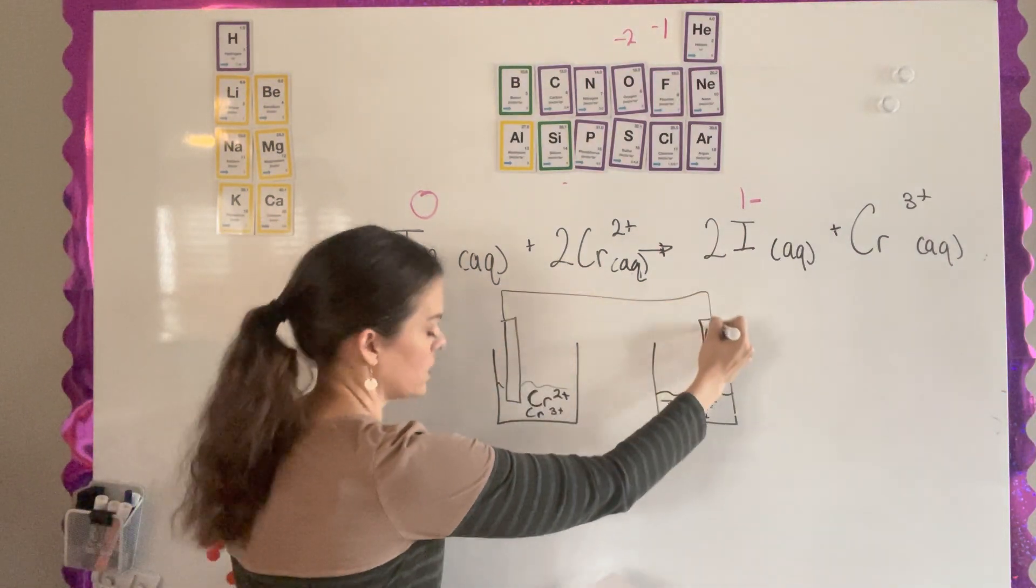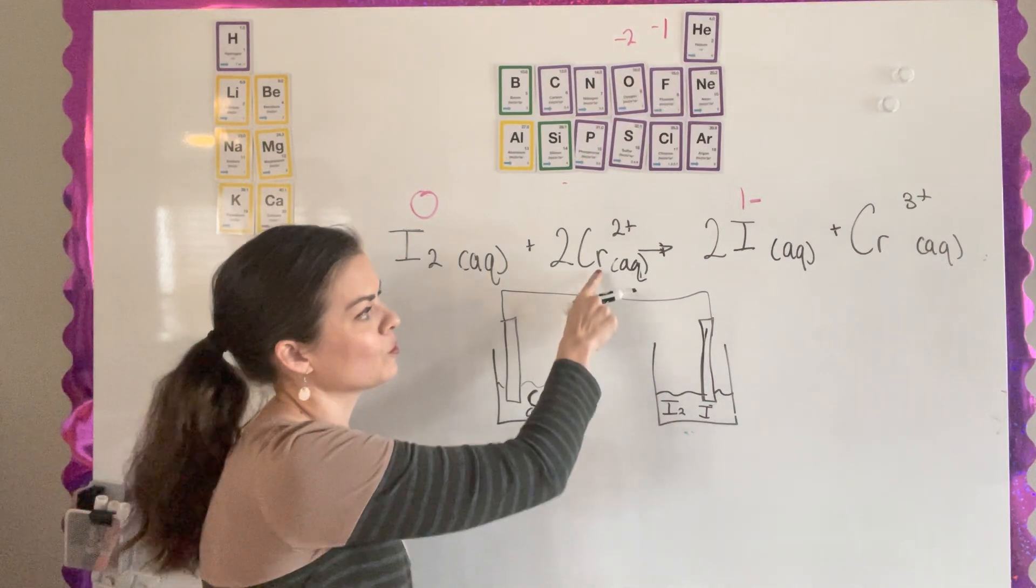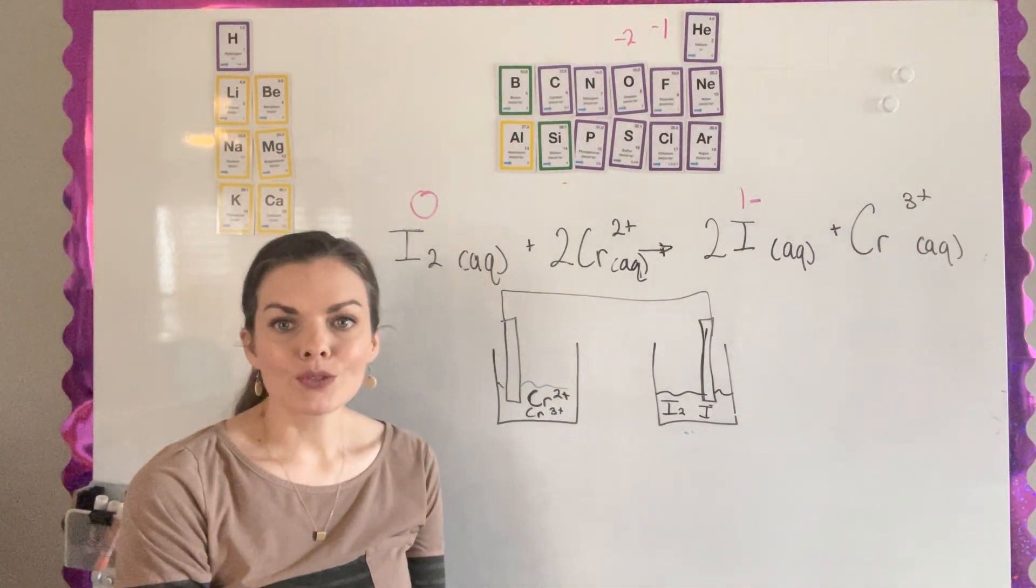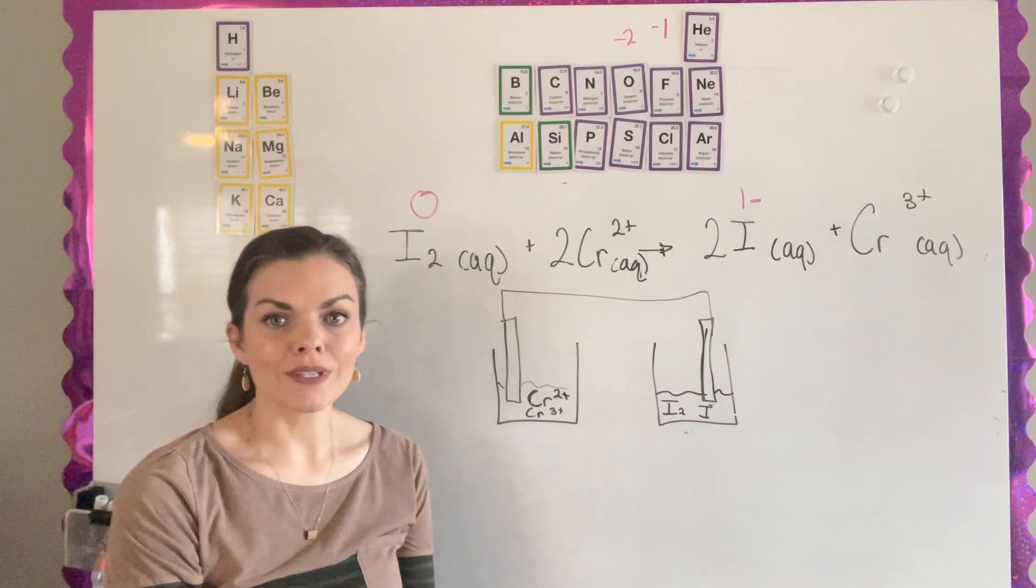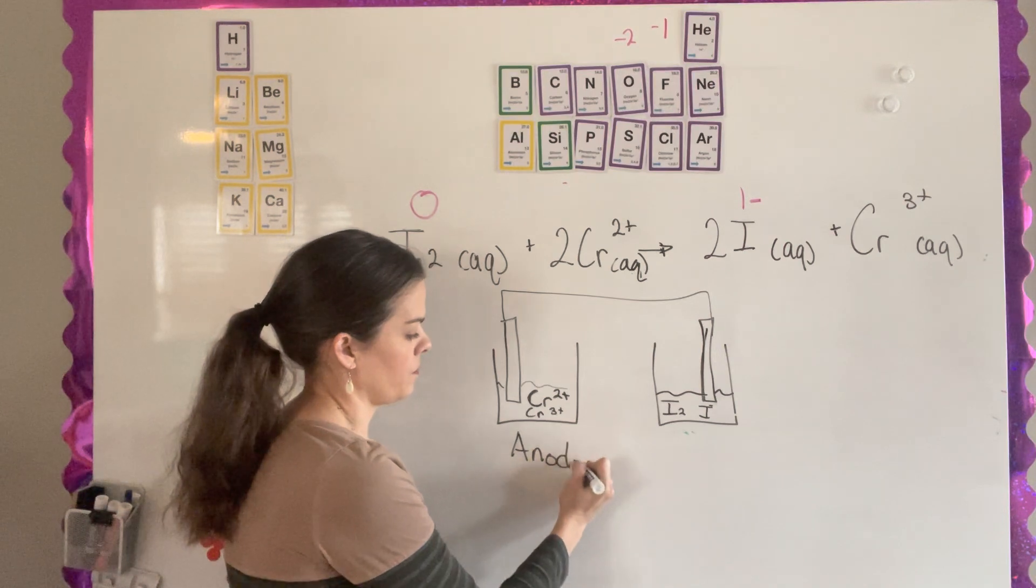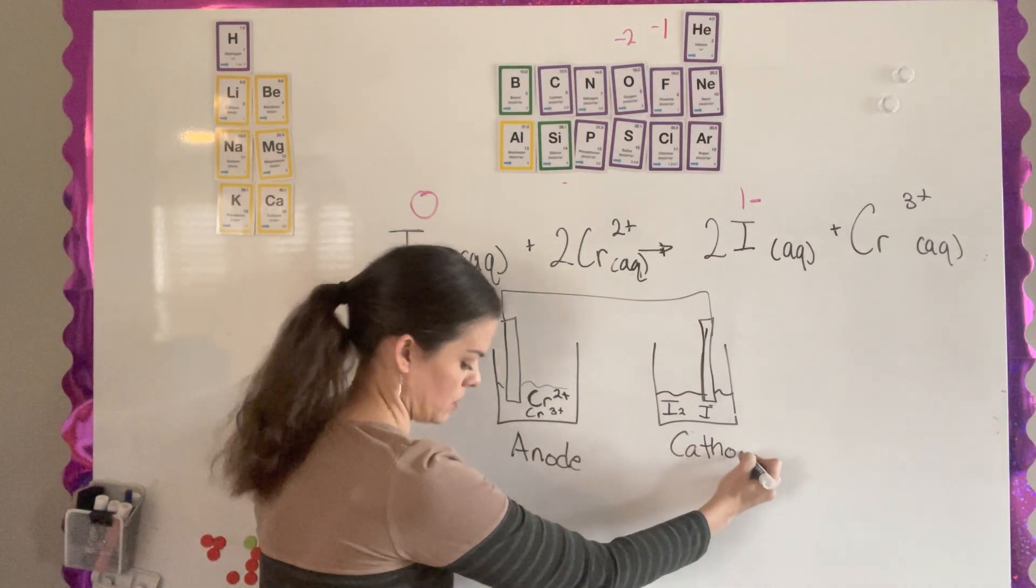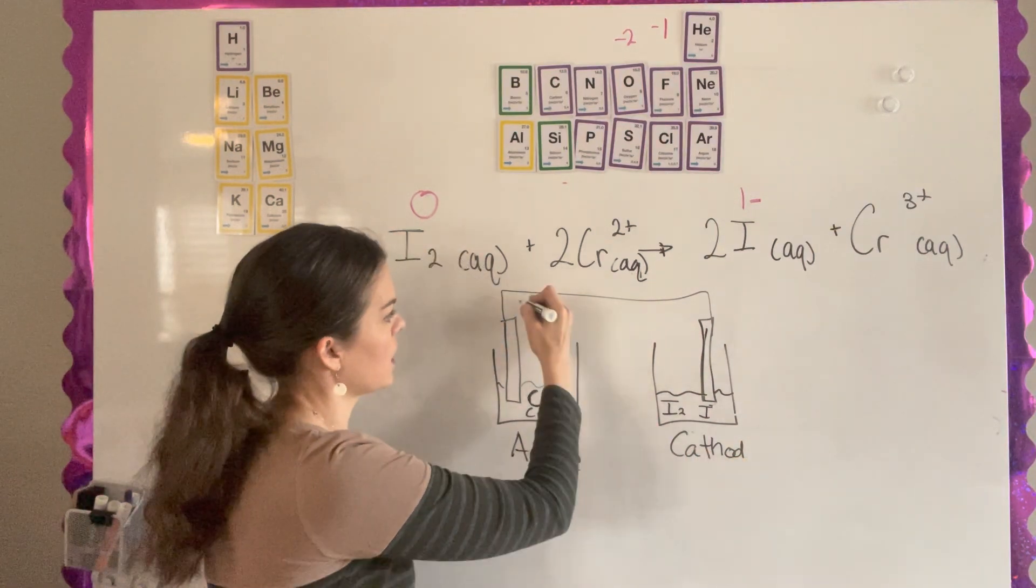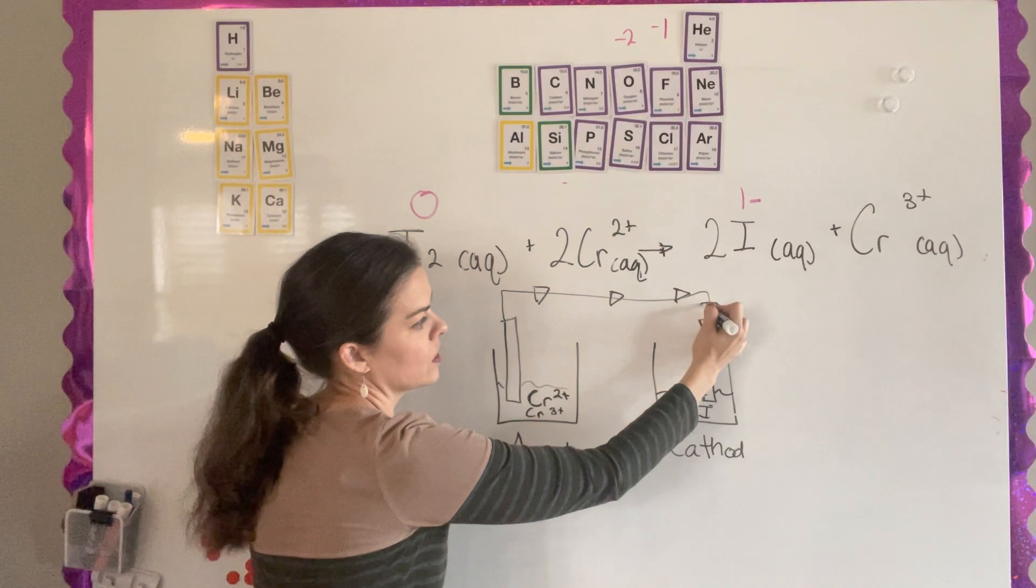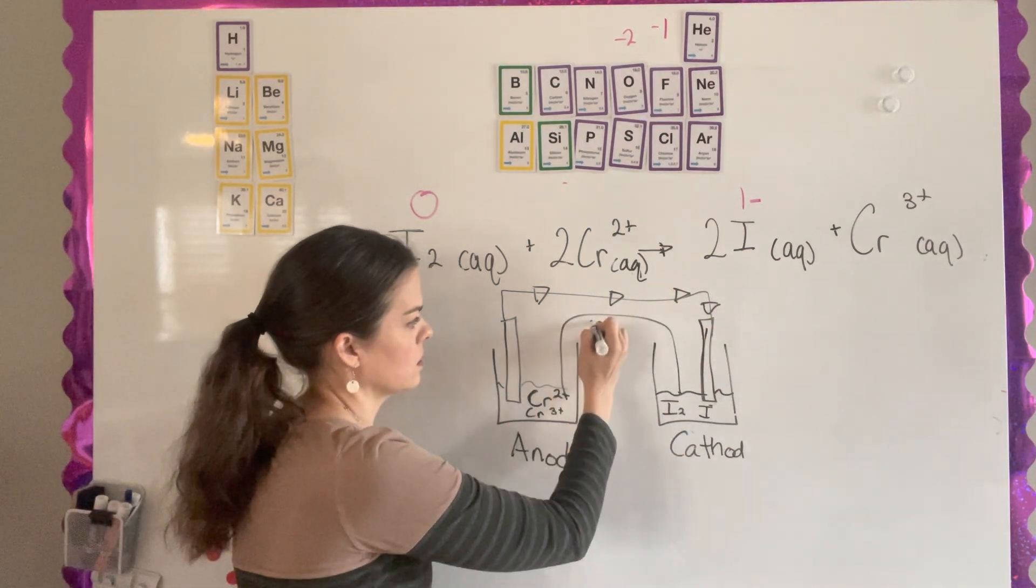So we have our electrons here. Chromium is losing electrons. It's going from being the two plus to the three positive. So losing electrons is loss of electrons as oxidation. And so this is actually your anode. And so therefore this is your cathode and electrons flow from my anode to my cathode. And you would also need your salt bridge.